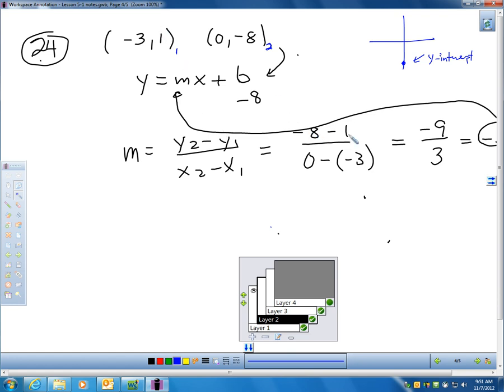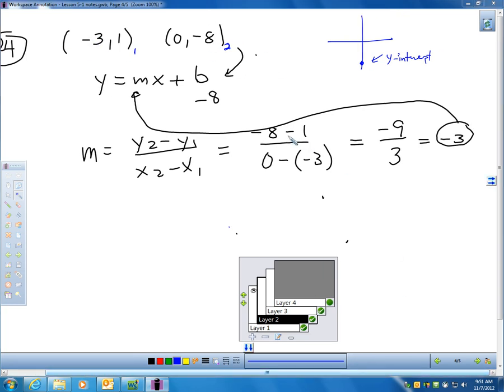So, y sub 2 is negative 8. y sub 1 is 1. And, x sub 2 is 0. And, x sub 1 is negative 3. And, when you quickly calculate that, you get negative 9 over positive 3, which is negative 3. That's my slope,